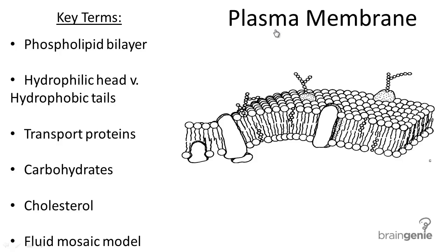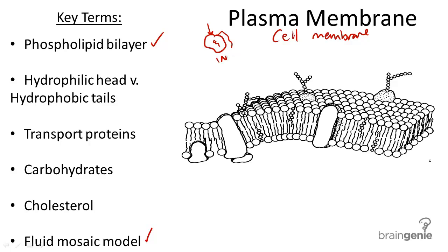The plasma membrane, also known as the cell membrane, the phospholipid bilayer, and the fluid mosaic model, is the structure that surrounds a cell on the outside. It controls what enters and what exits the cell. Every cell has a plasma membrane, and every organelle is surrounded by one.